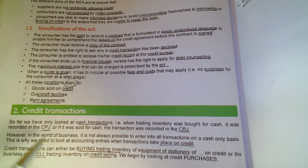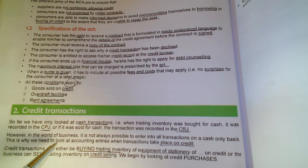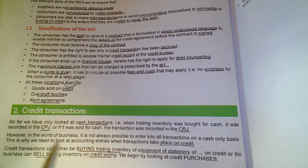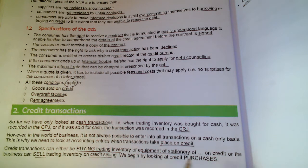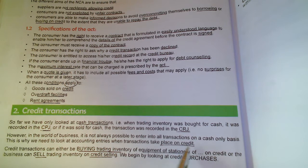In the business world, everything doesn't happen on cash — people are able to buy on credit as well, and we're going to look at all these accounting entries in this chapter. Credit transactions can involve buying trading inventory, equipment, stationery, or other things on credit.